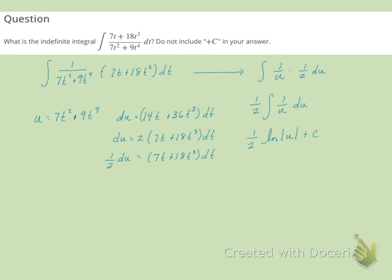We talked about this in section 4.10. Replace that u back, and we'll have 1 half natural log of the absolute value of 7t squared plus 9t to the 4th plus c. And that's our final answer.